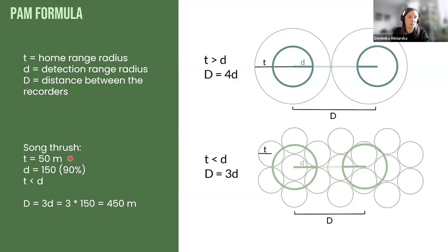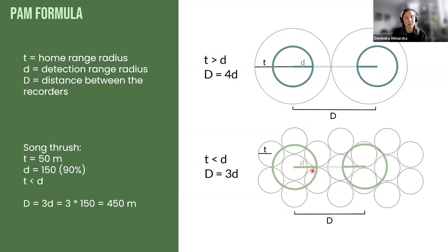This formula applies for species with larger home ranges or territories than they can be heard, which is usually the case for big species like pigeons. The other formula is for species that live in larger densities — they can have smaller territories, but their vocalizations are quite loud so they can still be heard at the edges of neighboring territories. Here is the example for the song thrush: if we consider territory radius to be 50 meters, and from our work we know the detection distance for the song thrush at 90% detectability was 150 meters, then since the territory radius is smaller than the detection radius, we can triple the detection radius — three multiplied by 150 gives us 450 meters as the distance between two recorders to ensure that birds recorded are different individuals.